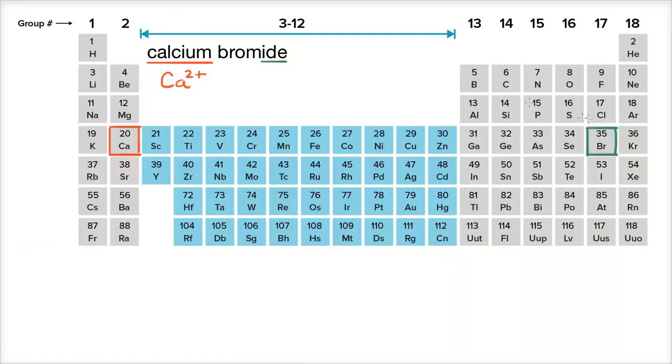And so bromine would like to gain an electron to have eight electrons in its outermost shell. So our bromide anion is going to look like this. It's going to be one minus. It's going to want to gain an electron. That's what the elements in this group like to do.